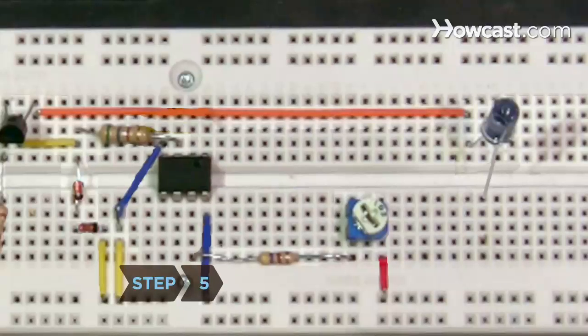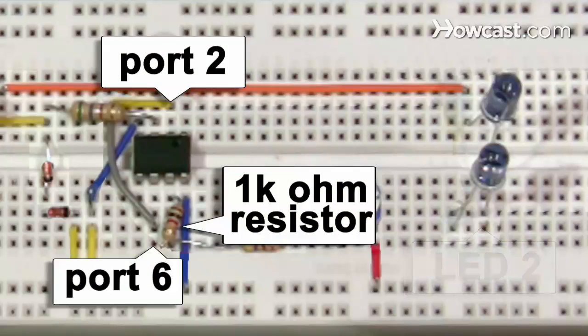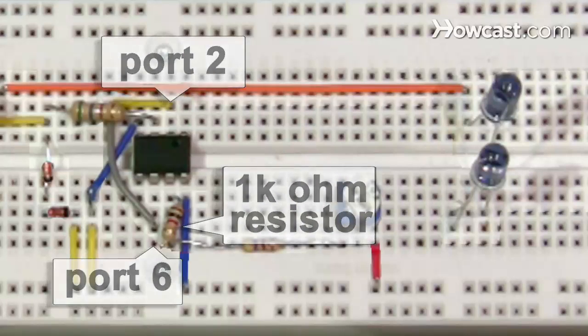Step 5: Connect the negative terminal of the LED to the positive terminal of the other LED. Then, connect the 1K resistor to ports 6 and 2 of the timer into the first 10 nanofarad capacitor.